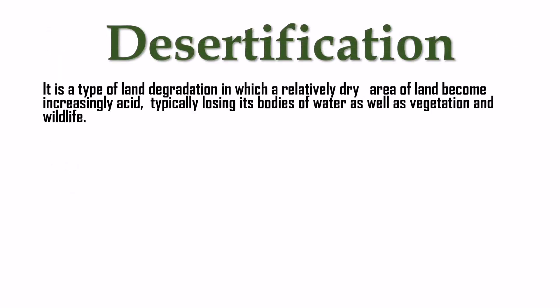Desertification is a type of land degradation in which a relatively dry area of land becomes increasingly arid, typically losing its bodies of water, vegetation, and wildlife. Dry land becomes increasingly acidic, losing its fertility, vegetation, water bodies, and wildlife.